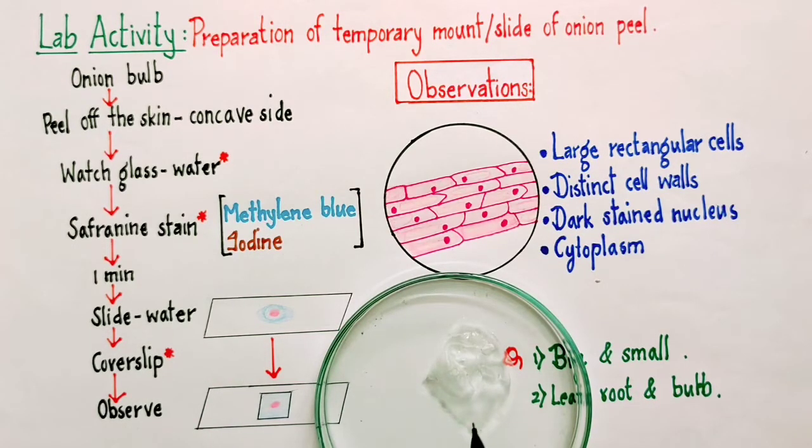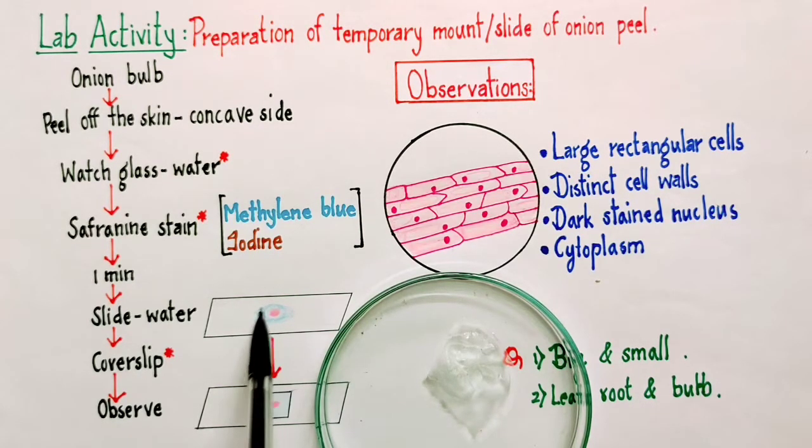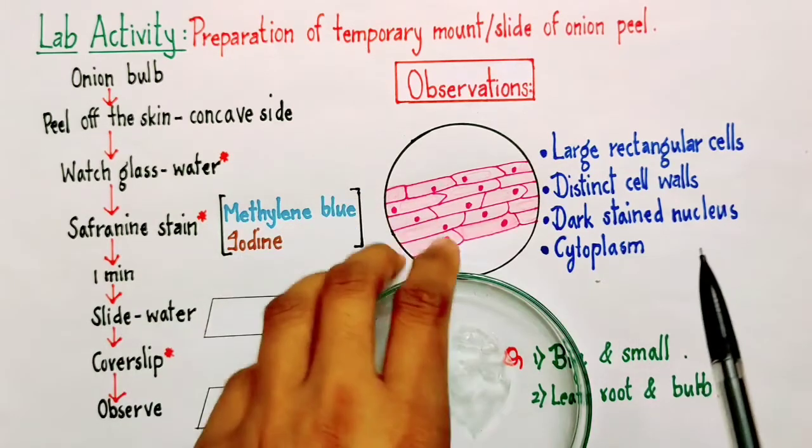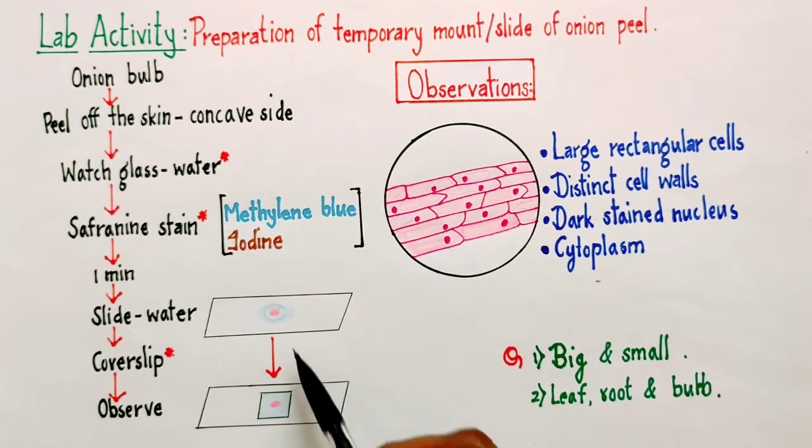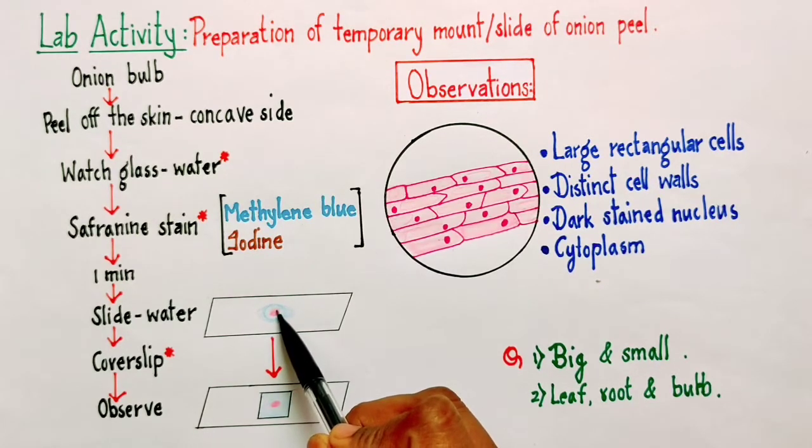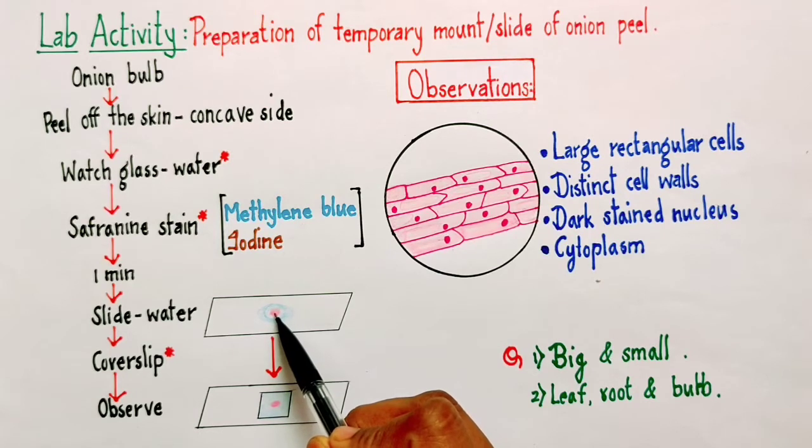After about one minute, we need to again take the forceps and cut it into small pieces and we are going to take a small portion of this, and then we are going to transfer it into a glass slide.